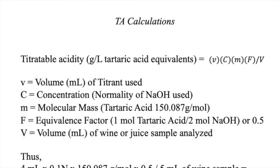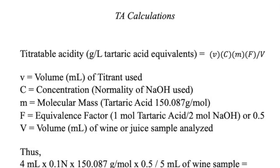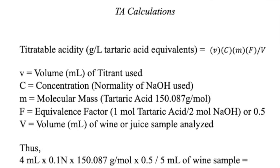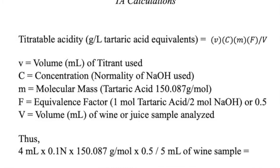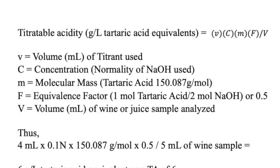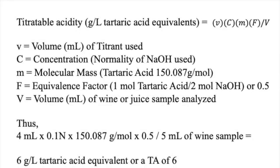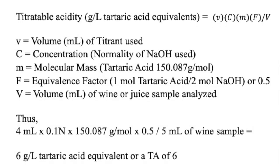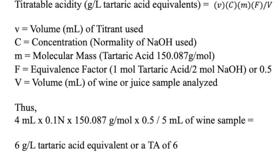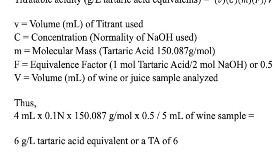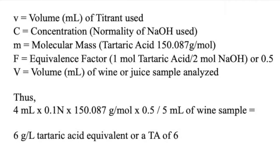This is how we make the titratable acidity calculations in terms of grams per liter of tartaric acid equivalents. First we need to know the volume of titrant used, which in this case was 4.4 milliliters. We need to know the normality of our sodium hydroxide, which was 0.1 normal. We need the molecular mass of tartaric acid, which is 150.087 grams per mole. The equivalence factor is 1 mole of tartaric acid for every 2 moles of sodium hydroxide, giving a value of 0.5. Our wine sample volume was 5 mL. So when we multiply 4.4 mL × 0.1 normal × 150.087 g/mol × 0.5, divided by 5 mL of wine sample, we get 6 grams per liter of tartaric acid equivalent, or a TA of 6.